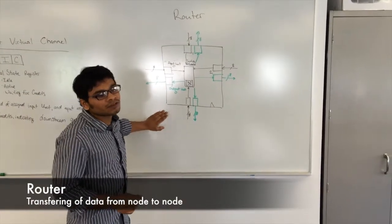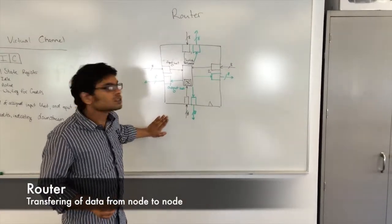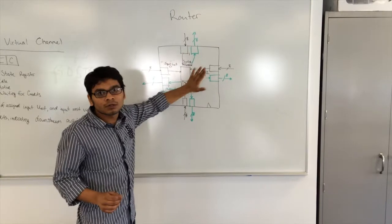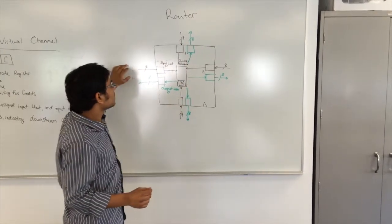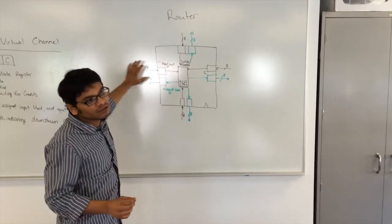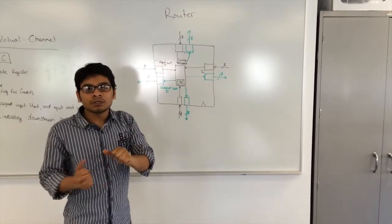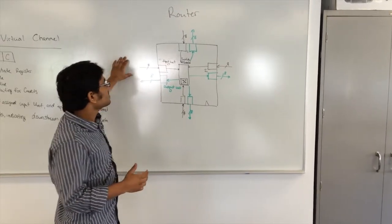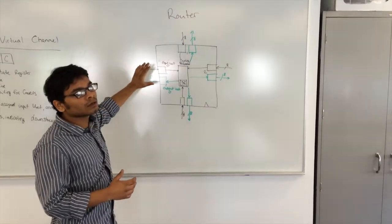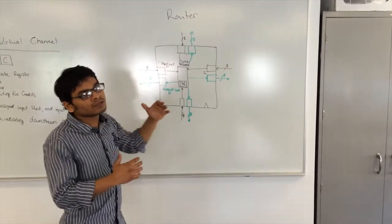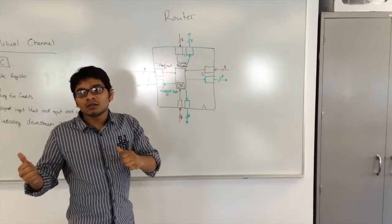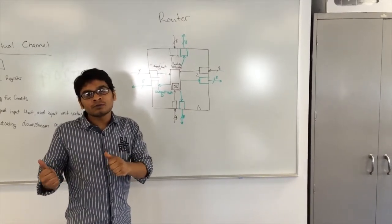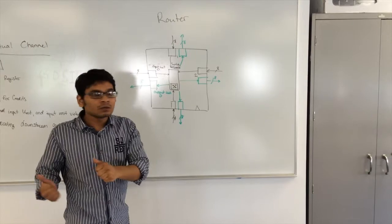The router that we have designed in our project has four input units and four output units. Each data comes in through the input unit and goes out through the output unit. The basic traversal of the data is such that the data comes in through the input unit and it interacts with the switch allocator for the allocation of the output unit through which it wants to go out.